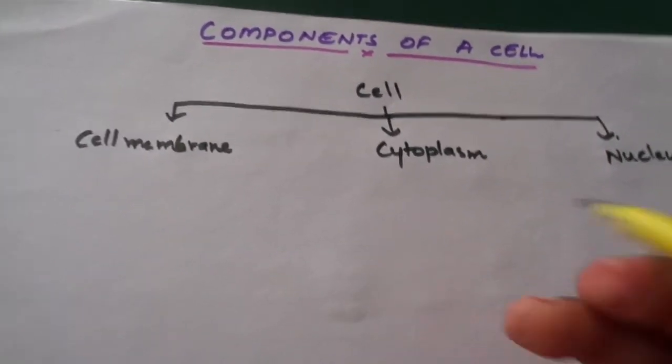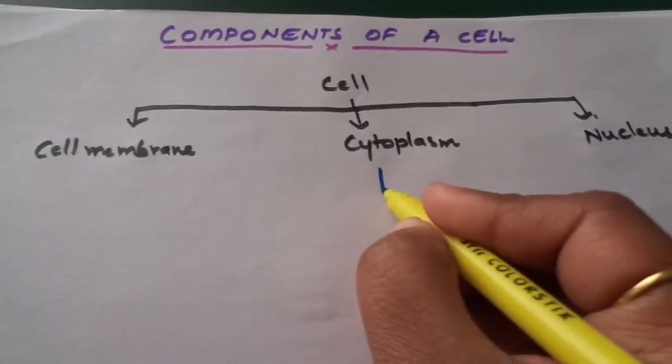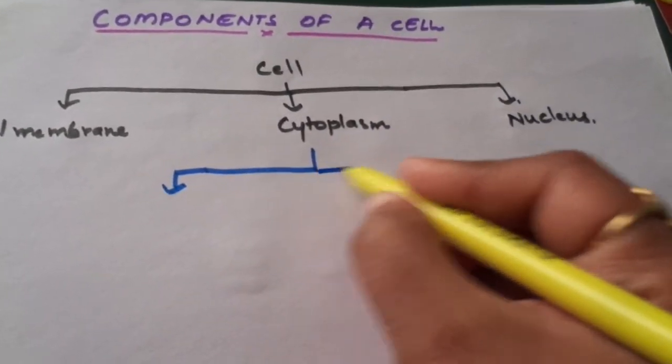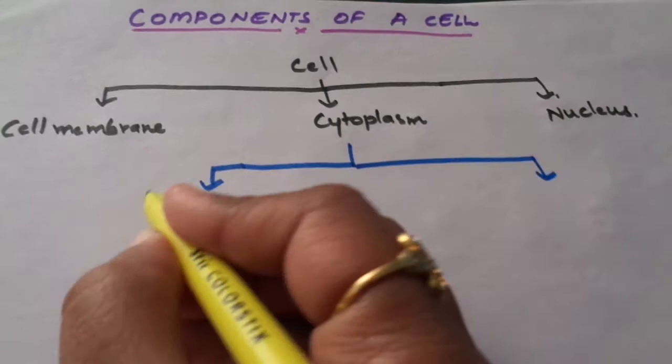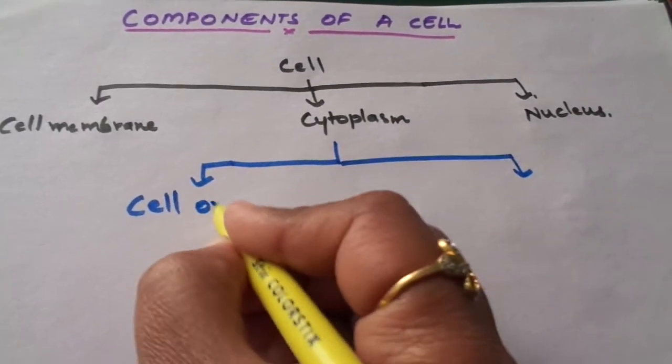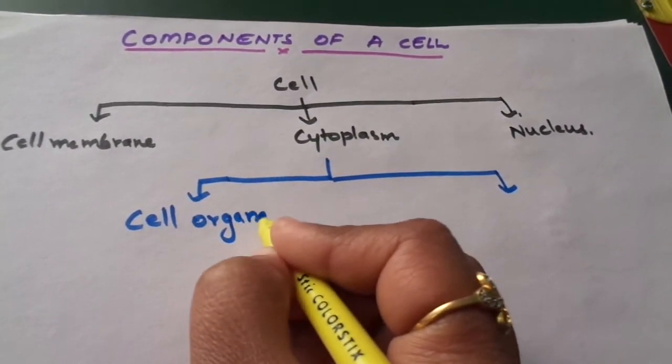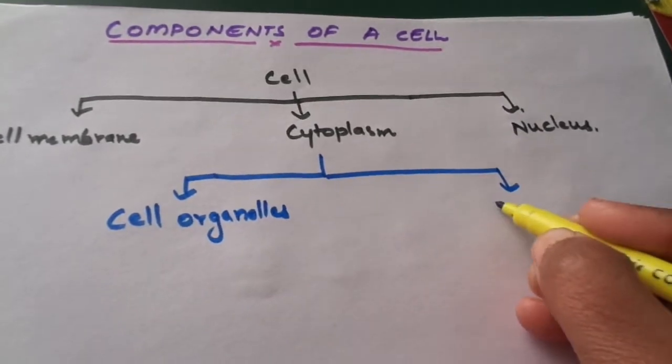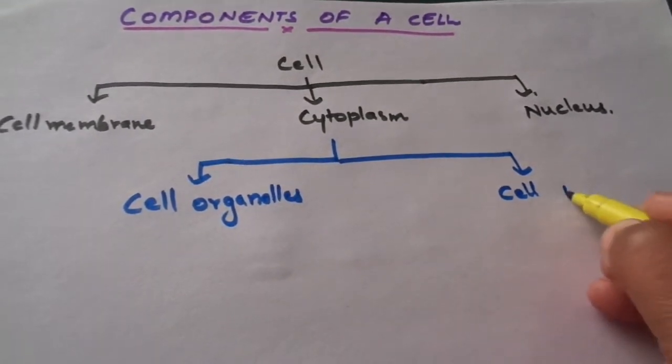The cytoplasm is again divided into two components, that is cell organelles and cell inclusions.